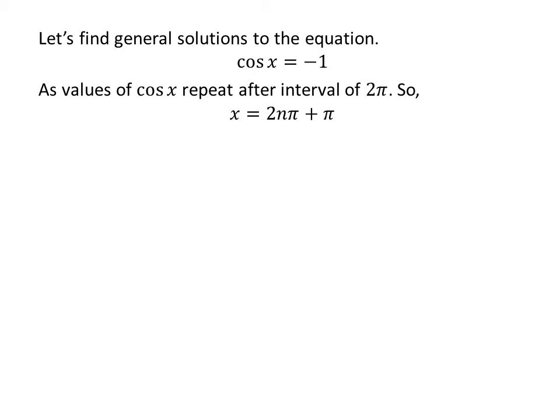So, the general solution is 2nπ + π where n is an integer. Further simplification gives us the general solution as (2n + 1)π.